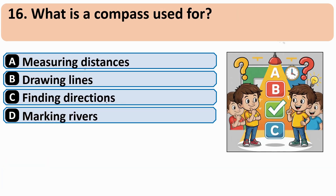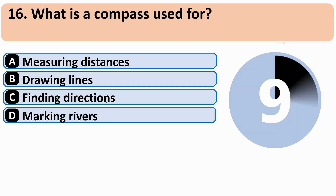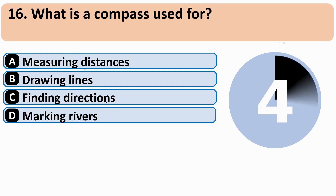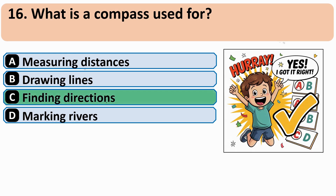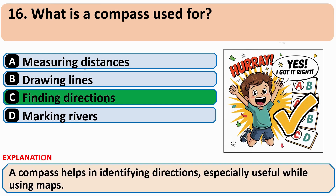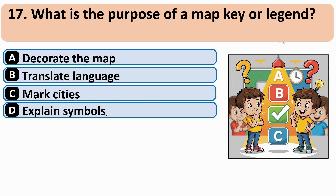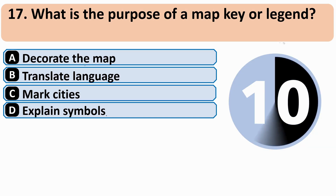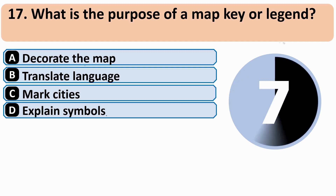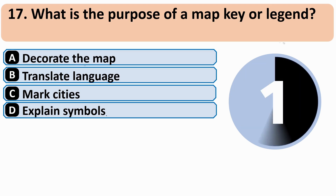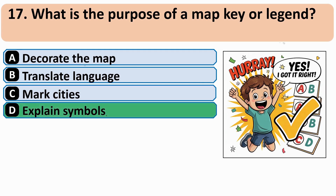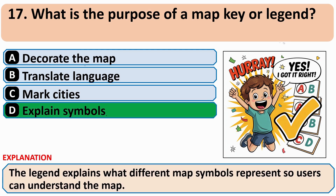What is a compass used for? The correct answer is C — finding directions. What is the purpose of a map key or legend? The correct answer is D — to explain symbols.